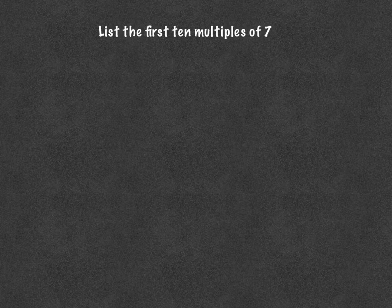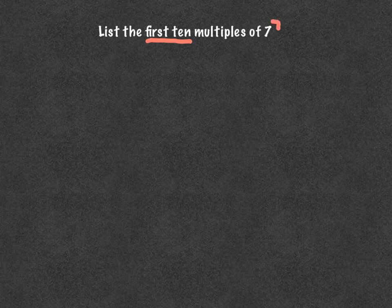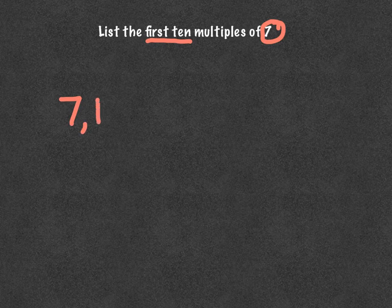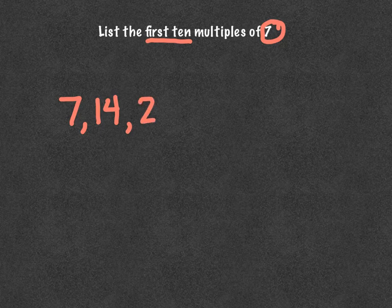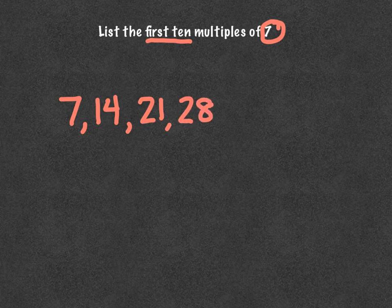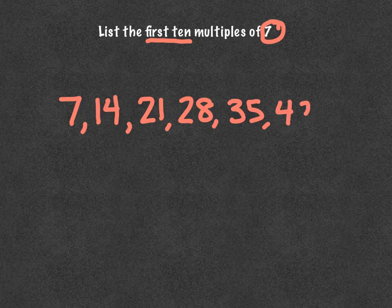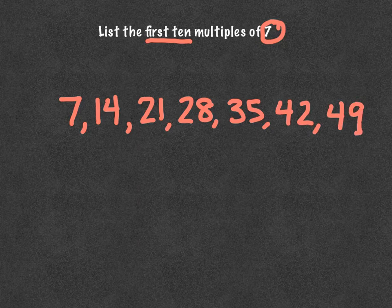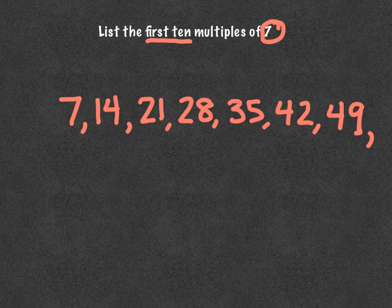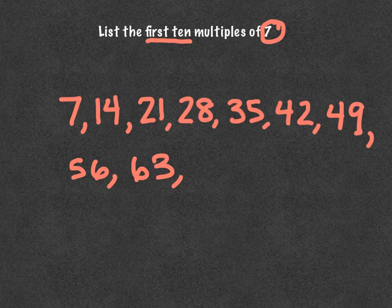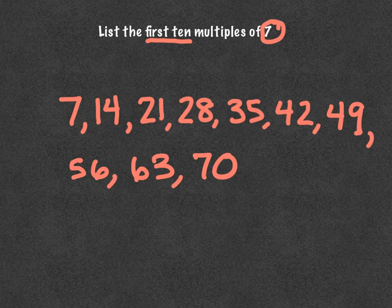So for example, with this one, we're going to list the first ten multiples of the number seven. So we're going to start with seven times one, which is seven, seven times two is fourteen, we'll put a comma in between to separate them. Seven times three would be twenty-one, seven times four is twenty-eight, seven times five is thirty-five, seven times six is forty-two, seven times seven is forty-nine, and I ran out of room. Seven times eight is fifty-six, seven times nine is sixty-three, and seven times ten is seventy. So those are the first ten multiples of seven.